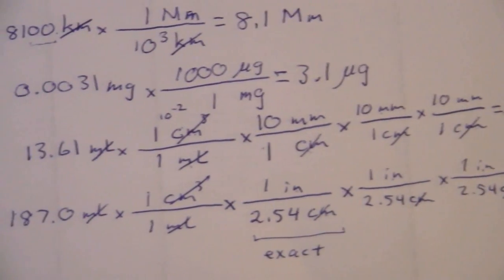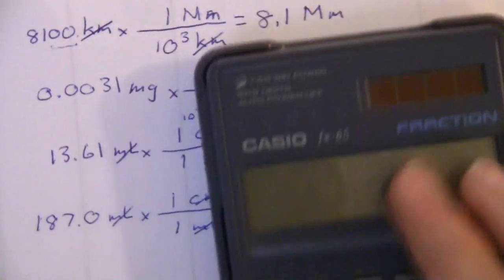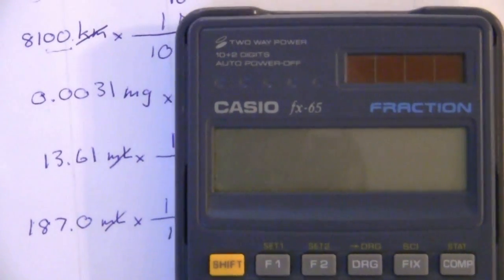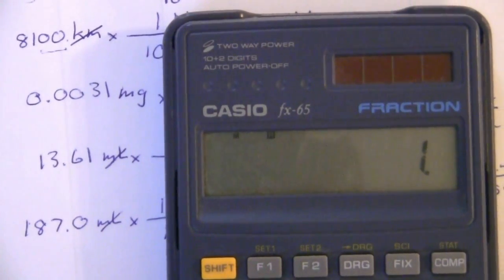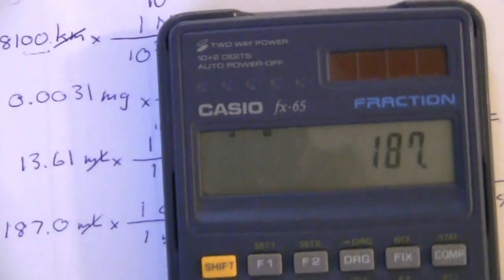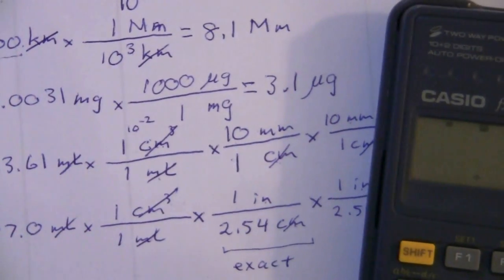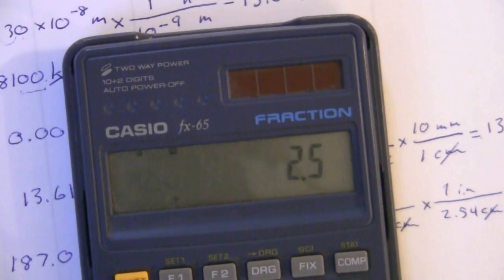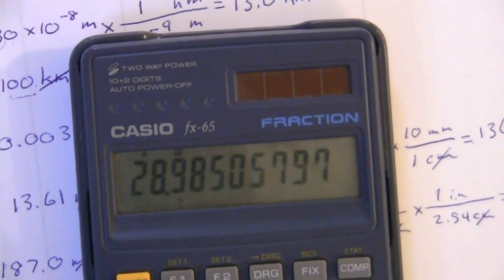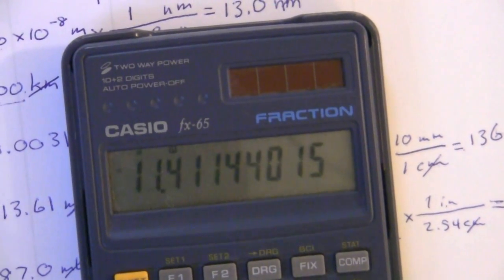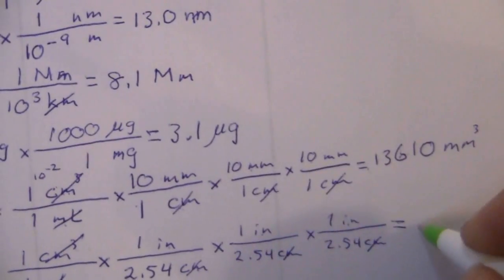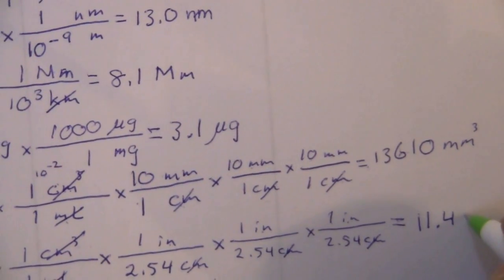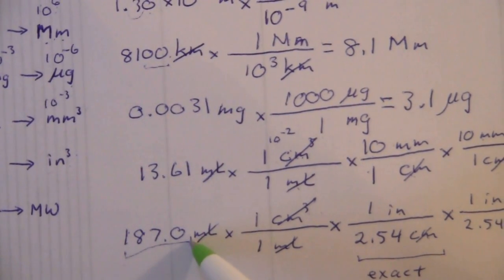For this one we're going to need a calculator. That is, let's see here: 187 divided by 2.54, and then we're going to divide that again by 2.54, and divide it a third time by 2.54. Then you have 11.411, and there's lots of other digits there, but we don't need that many.